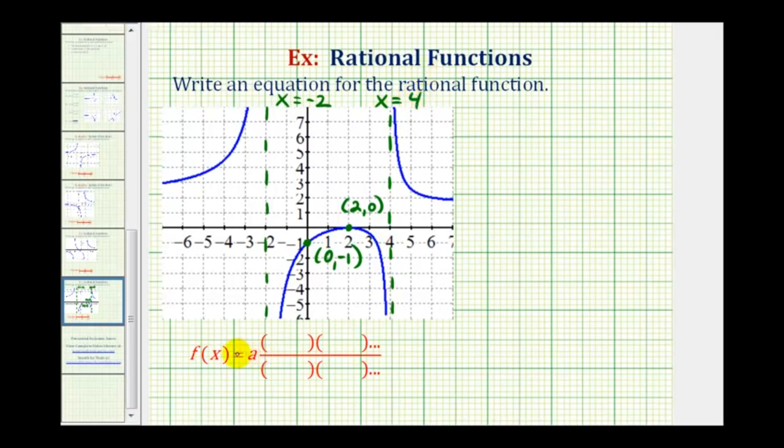Now we have enough information to determine our rational function, but we do have to remember that knowing we have vertical asymptotes at x equals negative 2 and x equals positive 4 gives us information about factors in the denominator. And knowing we have an x-intercept at 2 gives us information about factors in the numerator. To determine the value of a, or this constant, we can use the y-intercept.